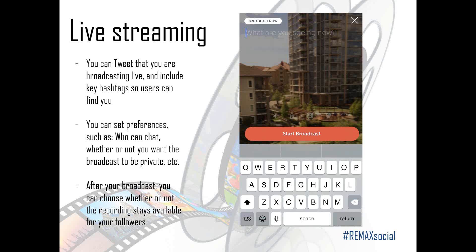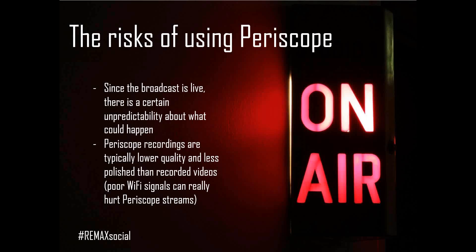While recording, you can double-tap on the screen to switch between your front or rear iPhone camera. After you finish broadcasting, Periscope will by default begin uploading the recording, which will be available for your followers to view for 24 hours. If something happened during the broadcast that you weren't keen on, you can press the screen to cancel the upload — it's not mandatory that the recording stays available for 24 hours.